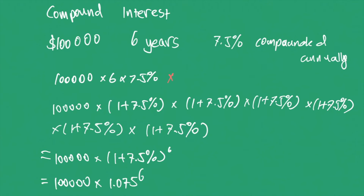We get $154,330.15. Then we subtract the original amount, giving us the interest earned.